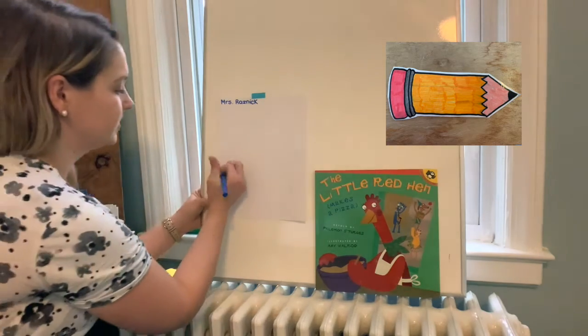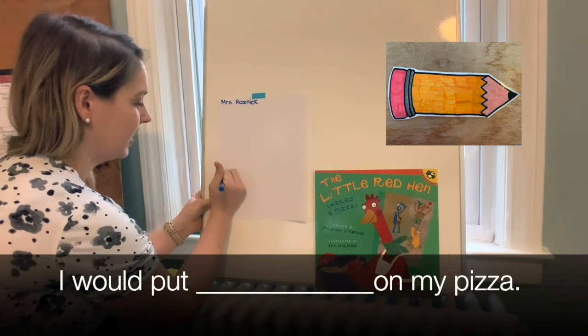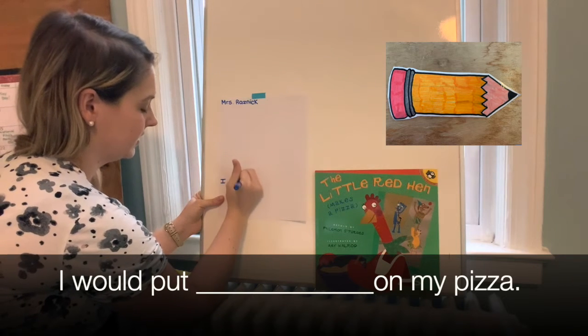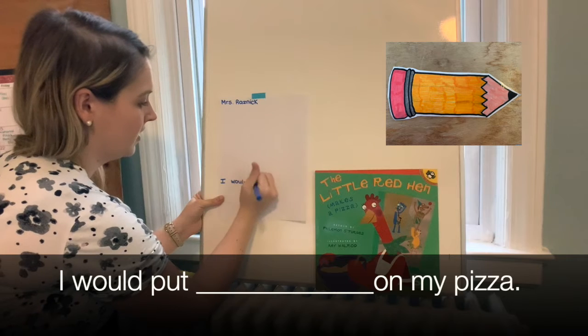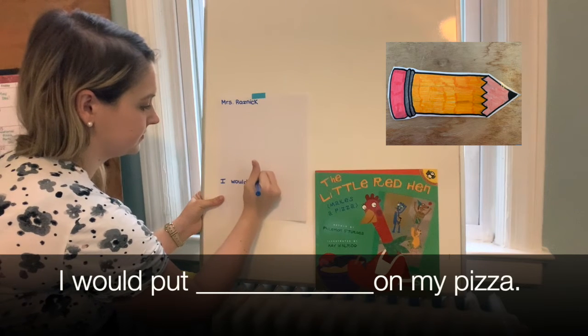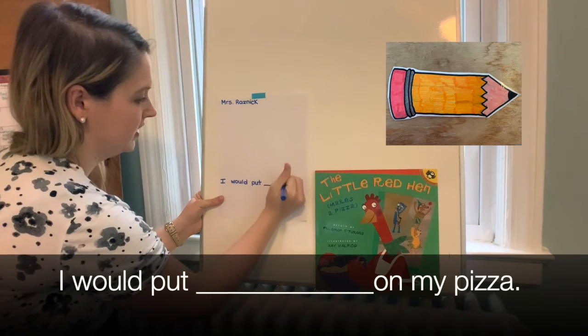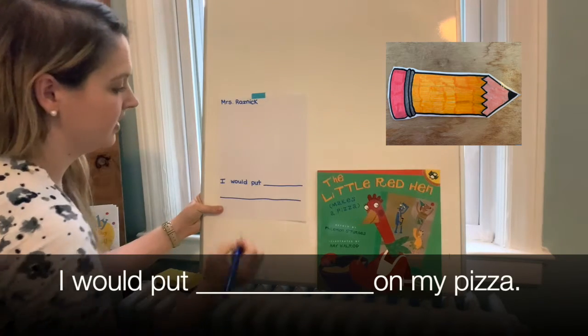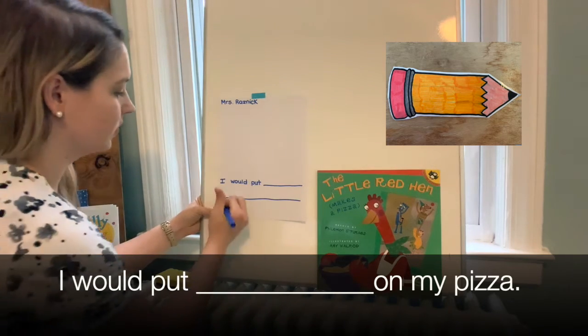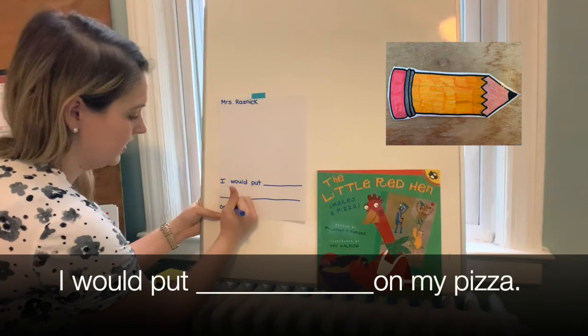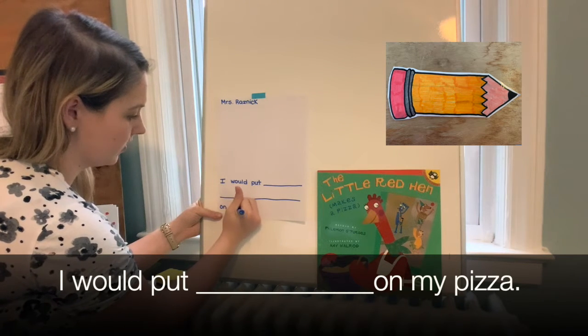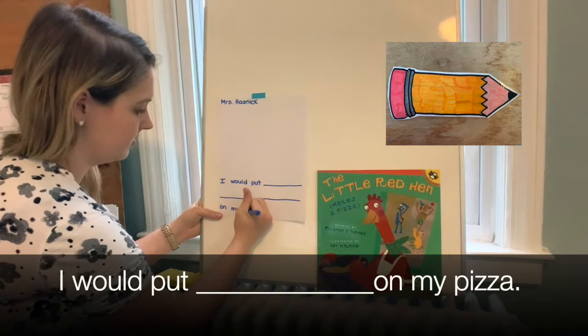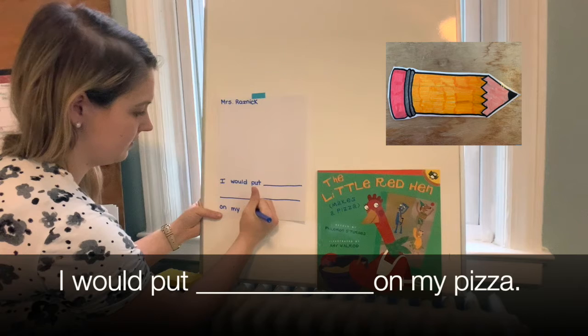Today for our sentence frame, we're going to be writing 'I' (popcorn word), 'would' (I'll give you the spelling of that one), 'put' (popcorn word). Then we'll leave our spaces in the middle, and then our words at the end are going to say 'on' (popcorn word), 'my' (popcorn word), and then we're going to borrow 'pizza' from the cover of the book.